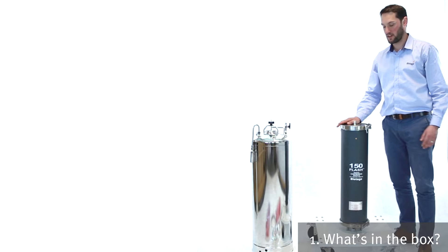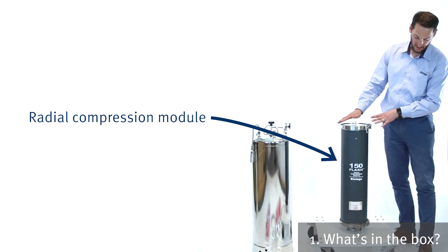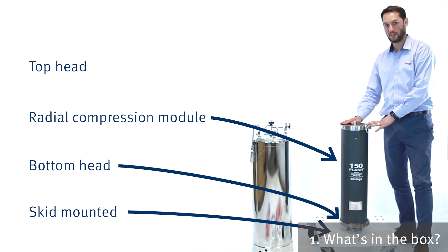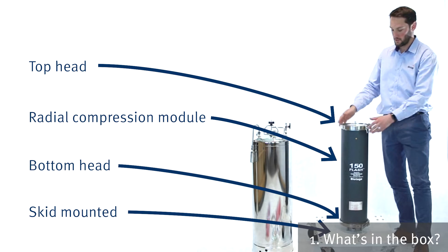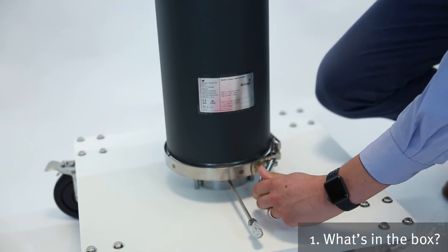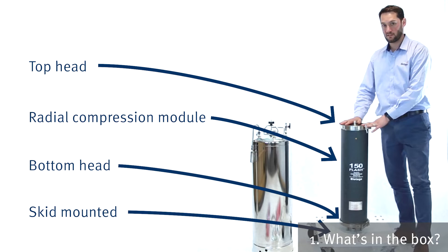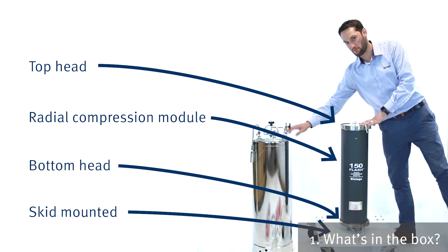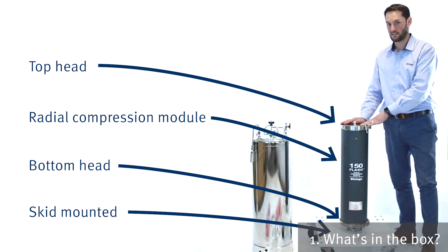On this side we've got the radial compression module. It's all mounted on a skid. We've got the bottom head and the top head. Those are both sealed onto the radial compression module with these V-band clamps. This is going to be pressurized, squeezing the cartridge that sits inside it, and then we're going to pump the solvent through from the 60 liter solvent reservoir.